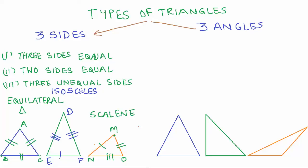So we discussed three types of triangles based on their sides. Three equal sides is an equilateral triangle. Two equal sides is an isosceles triangle. And all three sides being unequal is known as a scalene triangle.